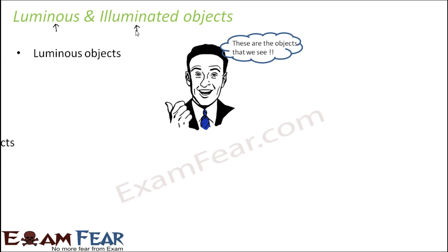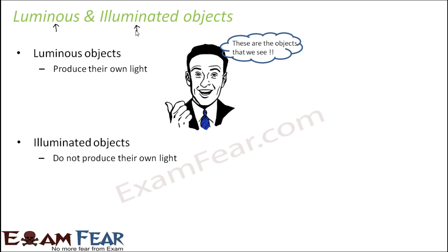Luminous objects are those objects which produce their own light — they generate light. For example, any example that comes to your mind instantly. Sun is a classic example of a luminous object, because the sun has its own light.